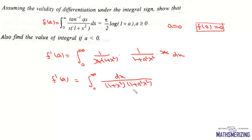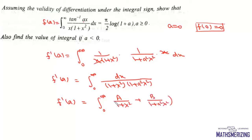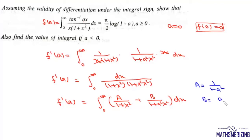We write f'(a) as the integral from 0 to ∞ of [A/(1+x²) + B/(1+a²x²)] dx. To find A, we put x² = −1, which gives A = 1/(1−a²). To find B, we put x² = −1/a², which gives B = a²/(a²−1), or equivalently −a²/(1−a²).